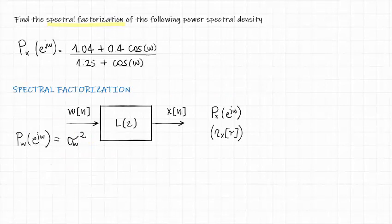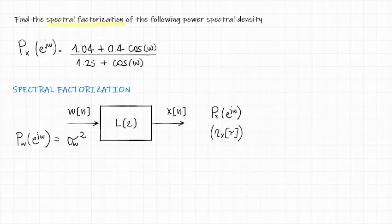The spectral factorization problem tries to answer the following question. Can we determine the system function L by knowledge of the power spectral density of the output or equivalently its autocorrelation function and that the input is white noise?